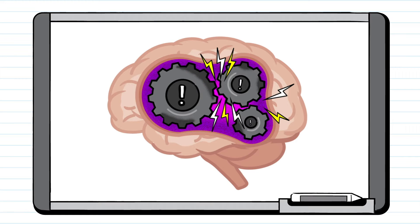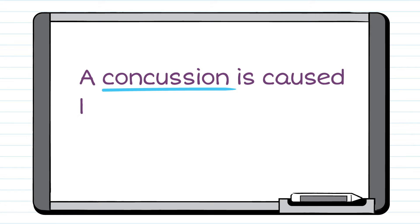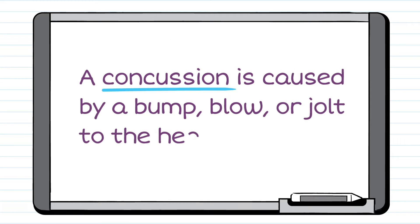Then several lightning bolts appear throughout the brain. A concussion is caused by a bump, blow, or jolt to the head.